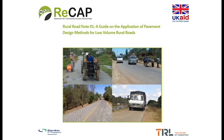Welcome to a TRL podcast. The Research for Community Access Partnership, RECAP, is a six-year programme of applied research and knowledge dissemination funded by UK Aid for the UK Department of International Development, DFID. The overall aim is to promote safe and sustainable rural access in Africa and Asia through research and knowledge sharing between participating countries and the wider community.